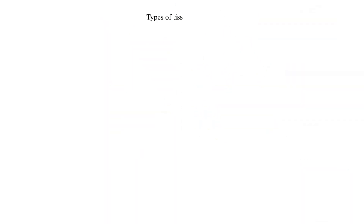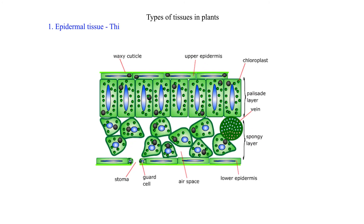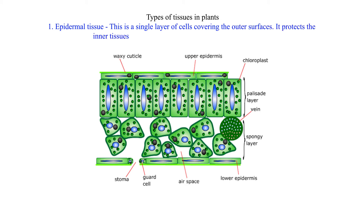Types of Tissues in Plants. 1. Epidermal Tissue: This is a single layer of cells covering the outer surfaces. It protects the inner tissues of plants from mechanical damage and infection.